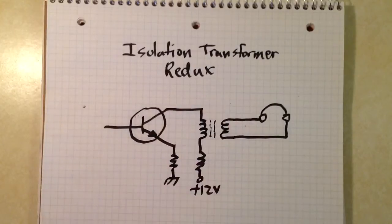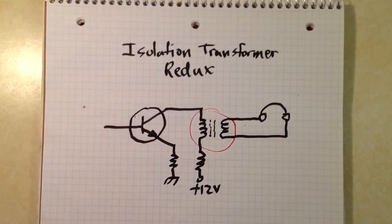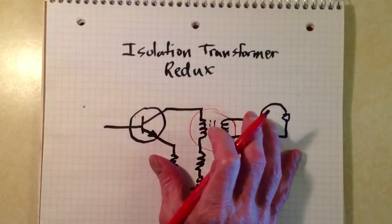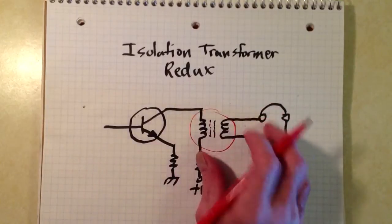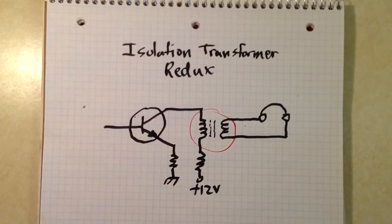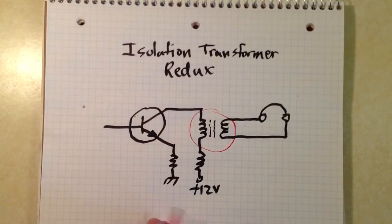An isolation transformer like this can minimize that hum and can minimize problems that you sometimes get if you directly connect a headset, for example, that's what this is, to the output of an audio amplifier.